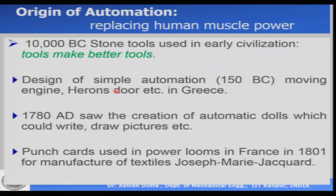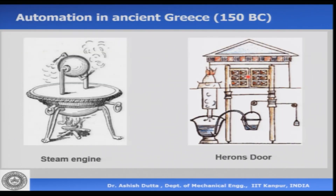If you look at the earliest automation, somewhere around 150 BC, of which records are there, such simple automation was there in Greece. This is the earliest example of a steam engine. Essentially, they would burn fire under a container of water, the water would boil and produce steam, and the steam would come out from two sides. Because the nozzles are on opposite sides, there would be a moment about the axis and the sphere would rotate. This is the earliest example of a steam engine, around 150 BC.